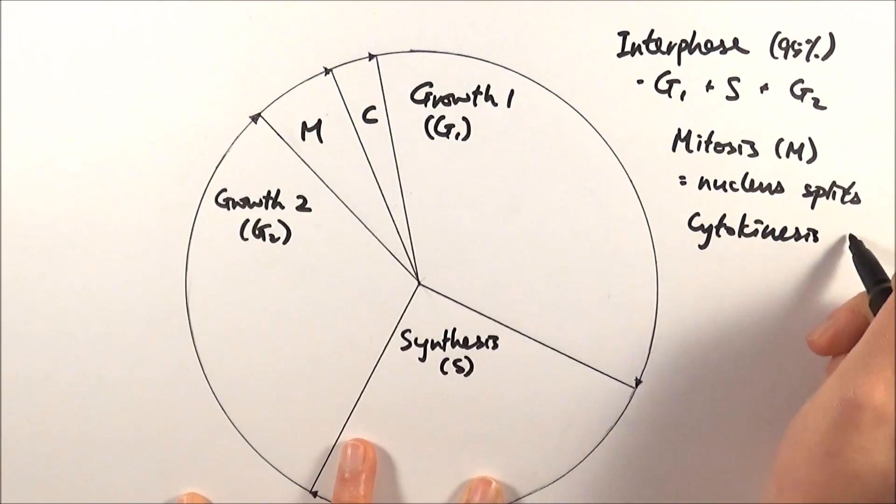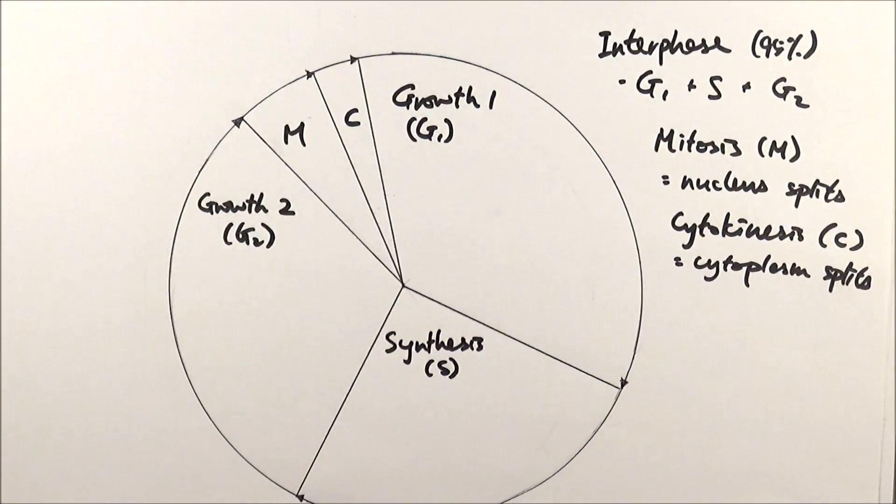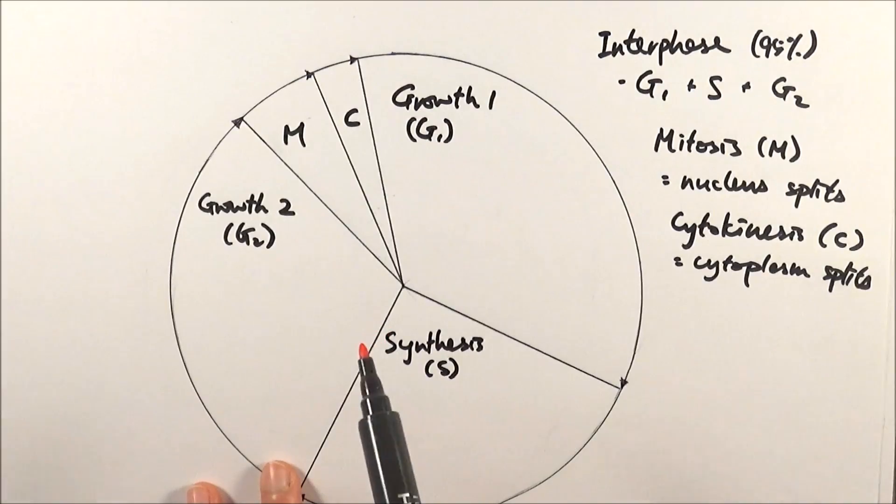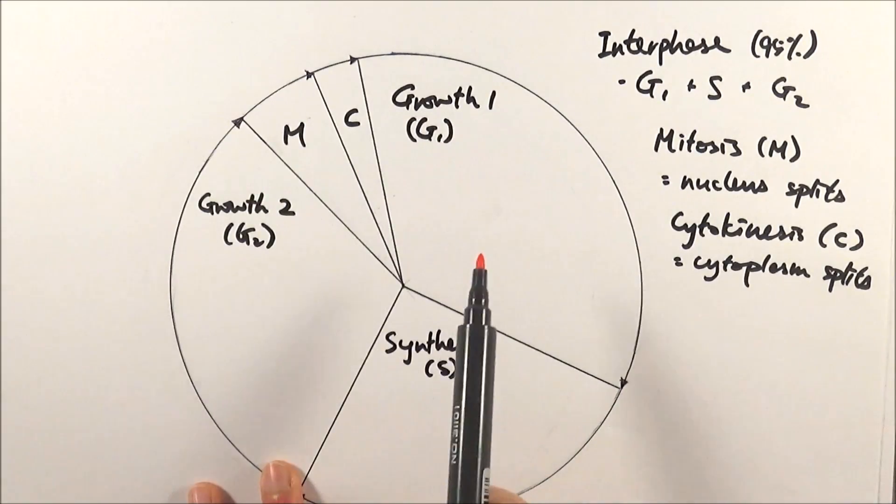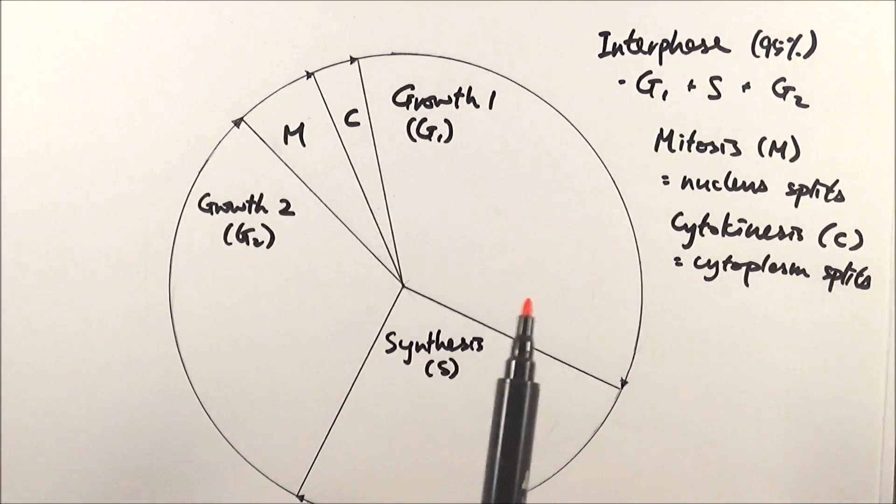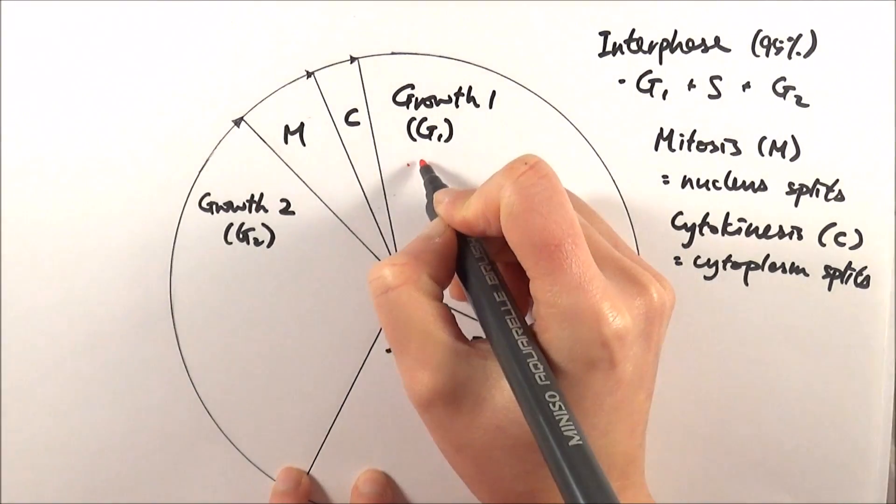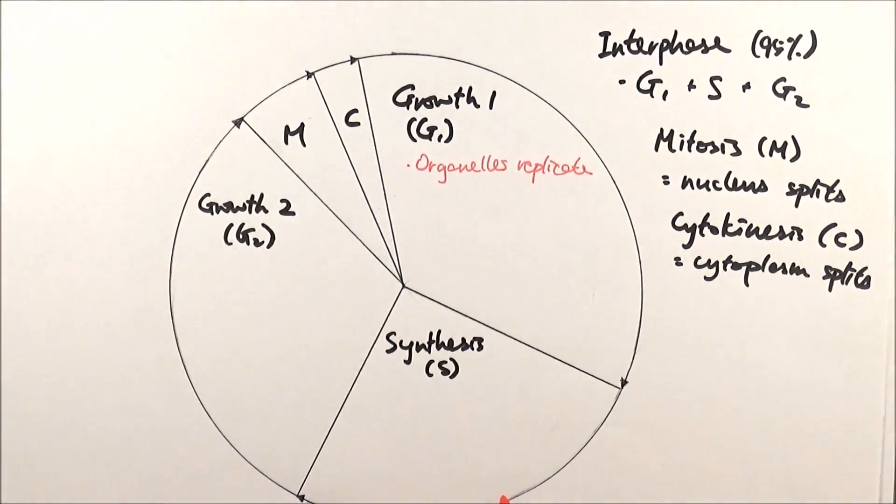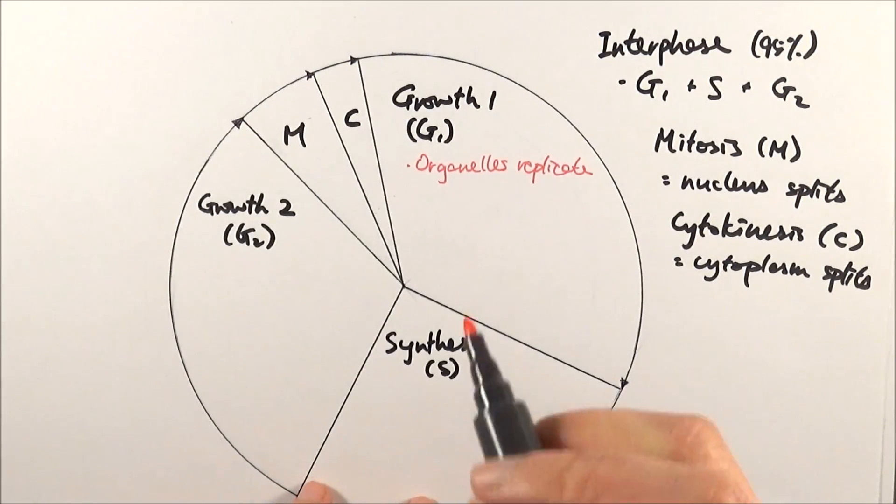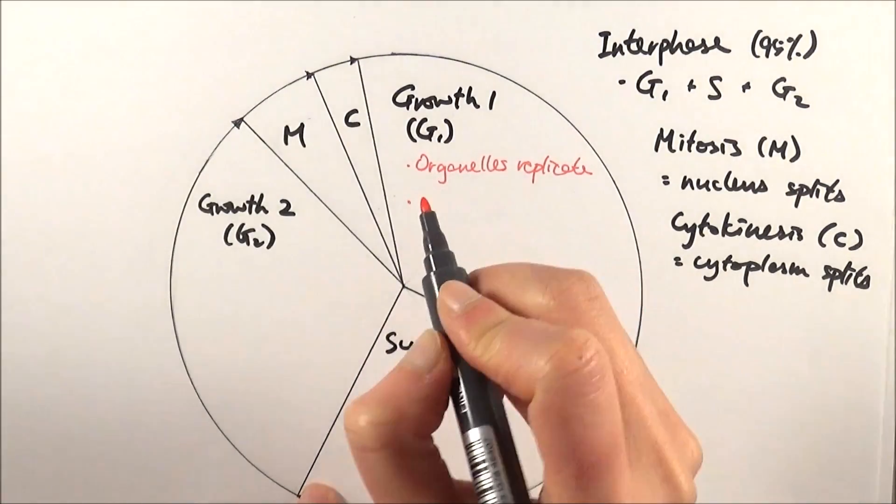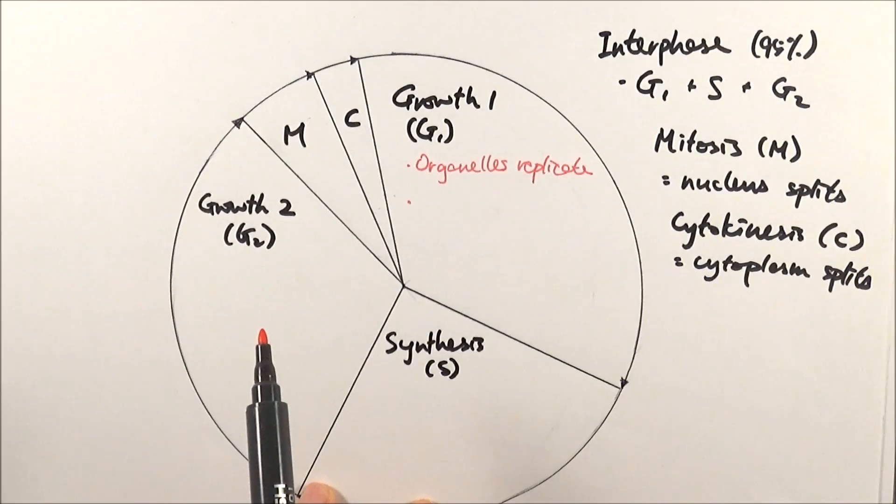We'll start with growth one, which is the beginning of interphase. The cell wants to prepare itself before it splits into two, so it needs to make sure it has a same copy of everything. Here you will be getting organelle replication, for example mitochondria, chloroplasts in plant cells, and ribosomes. They will make a duplicate copy of themselves to ensure that your resulting two cells will have exactly the same.